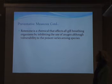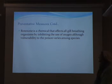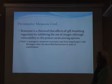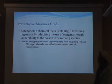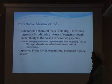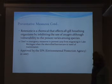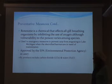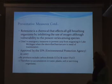Rotenone is a chemical that affects all gill-breathing organisms by inhibiting their use of oxygen, though vulnerability varies among species. It is used as an emergency measure to prevent carp from migrating to Lake Michigan when the electrified barriers are under maintenance. Approved by the EPA in 2007, its byproducts are carbon dioxide and water, so there is no accumulation in water, plants, soil, or surviving organisms.